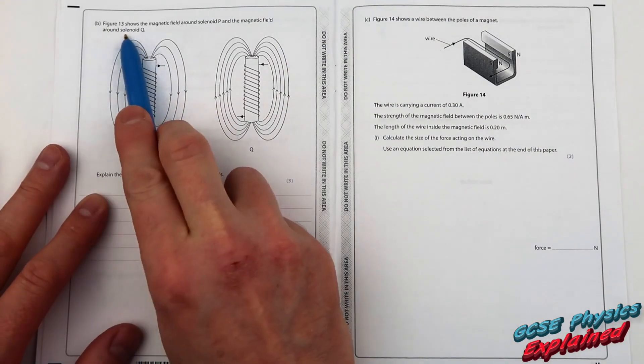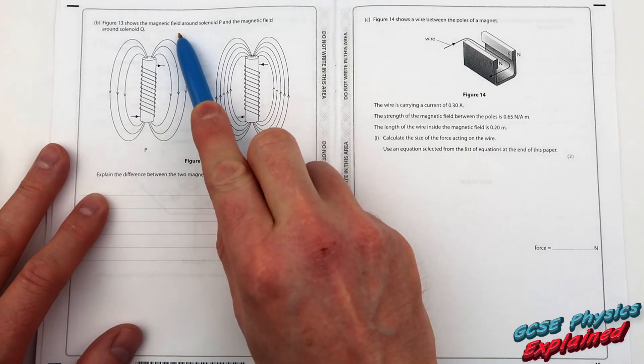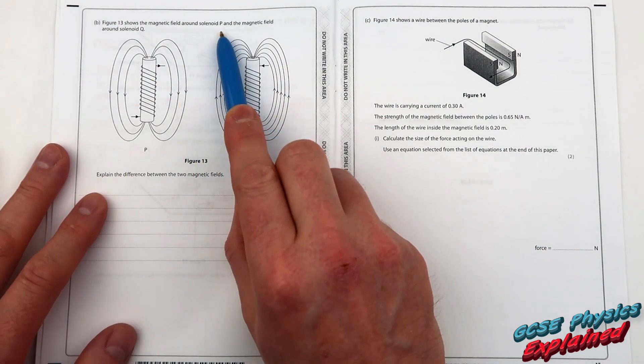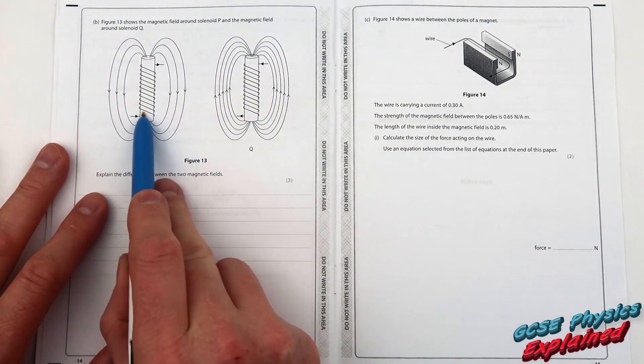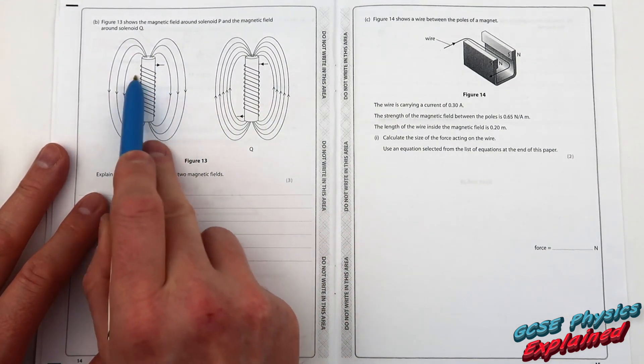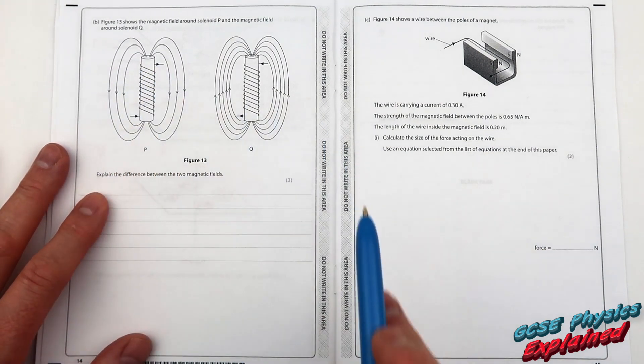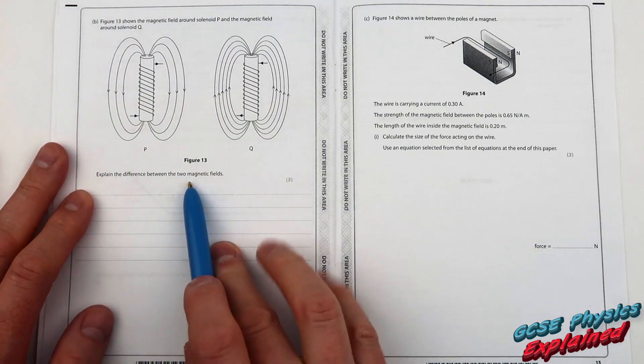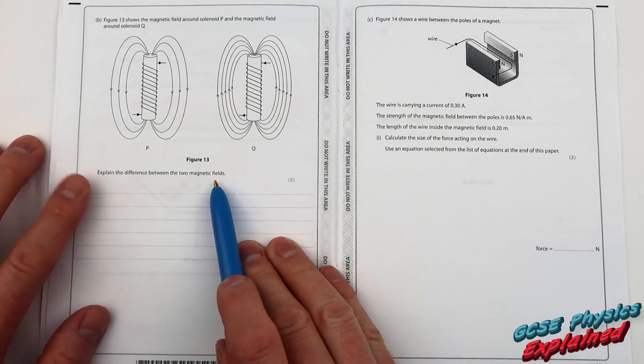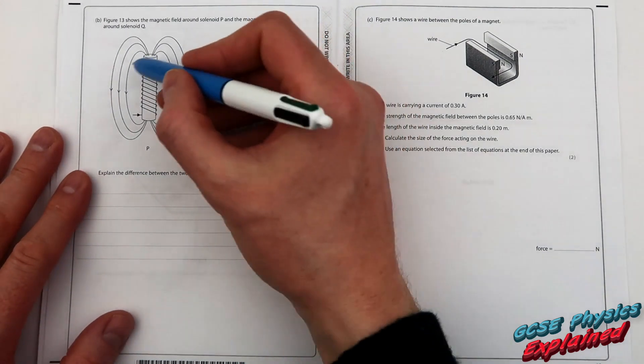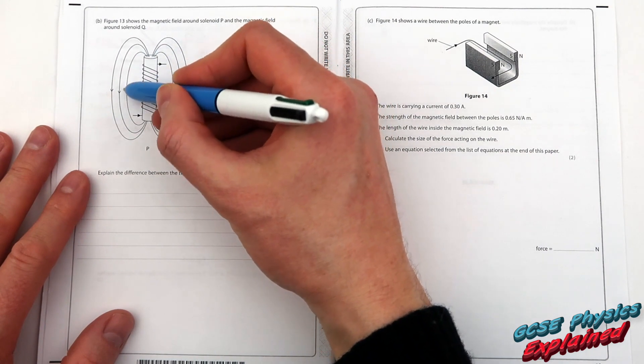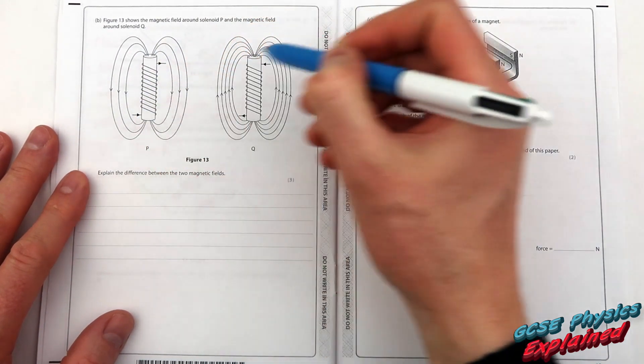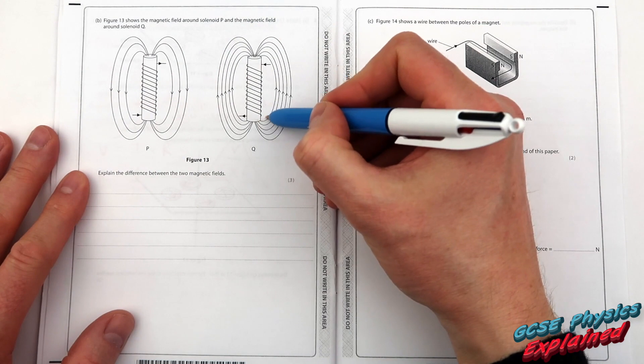Part B. Figure 13 shows the magnetic field around solenoid P and the magnetic field around solenoid Q. So a solenoid is just a coil of wire. Explain the difference between the two magnetic fields. Well I can see the direction of this magnetic field is going from the top down to the bottom. Whereas this one is going from the bottom to the top.